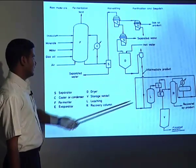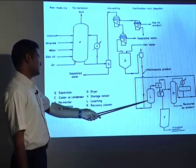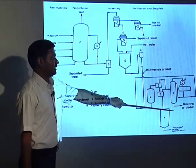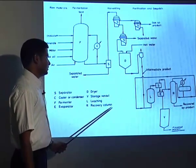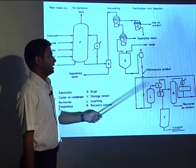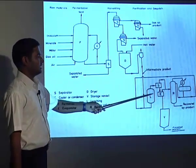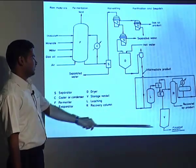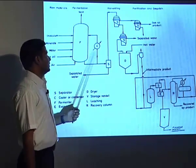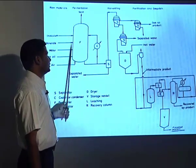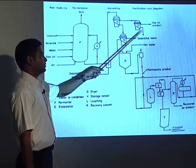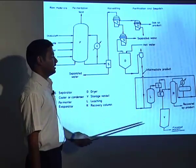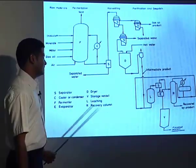Intermediate products then proceed through leaching, an evaporator, and a separator, leading to byproduct recovery. A recovery column recovers the byproducts, while the dried product coming from the dryer can be collected as finished protein concentrate. In summary: water and proteins produced are separated from gas, oil, and water; the dried product yields finished protein concentrate; other products formed are recovered in the recovery vessel.